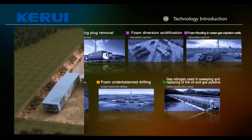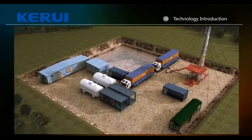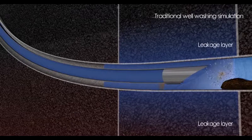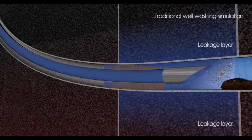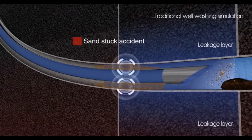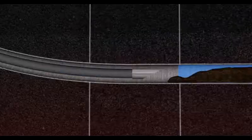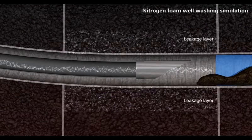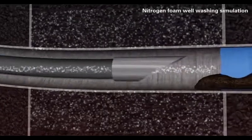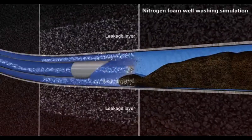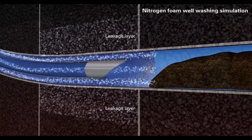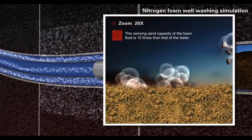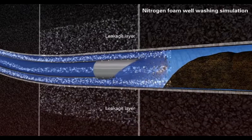Foam sand washing: severe leakage occurs when using normal flushing liquid in wells with lower reservoir pressure, causing difficulty establishing flushing circulation and leading to sand sticking accidents. The density of foam fluid is low and easy to adjust, successfully establishing flushing circulation in the oil sleeve with less leakage and formation contamination. The viscosity is high with low frictional resistance; sand carrying capacity is 10 times that of clean water, carrying gravel out of the well bore completely, particularly suitable for horizontal well sand washing.